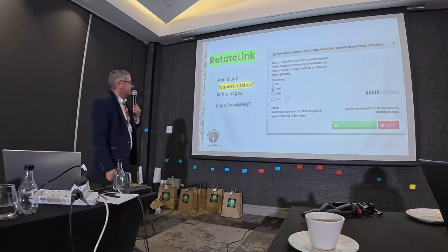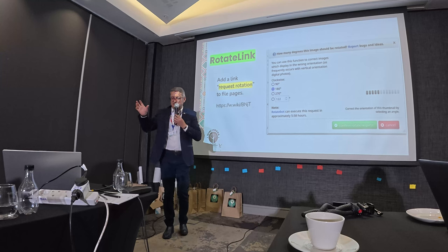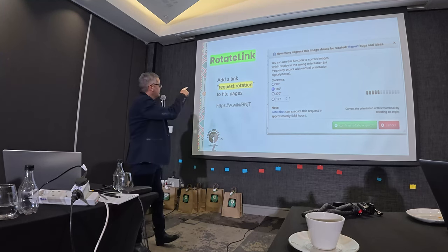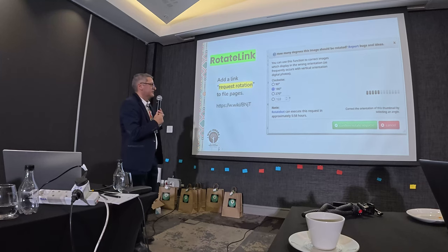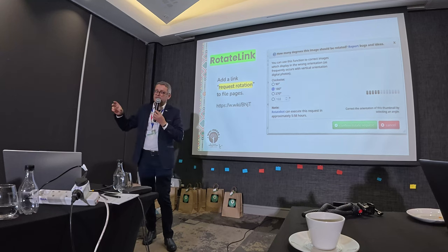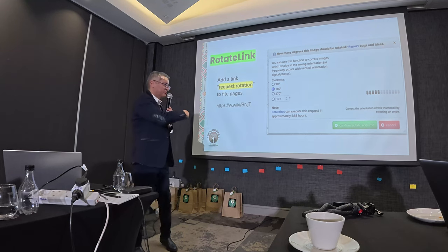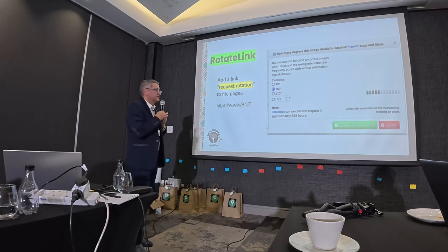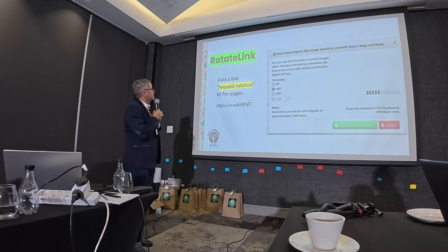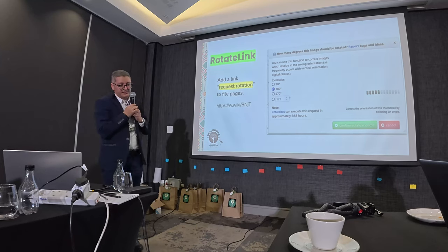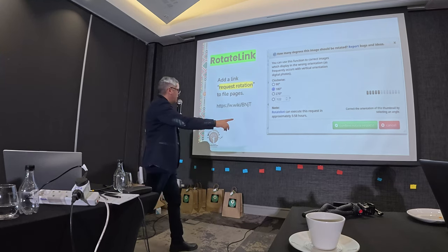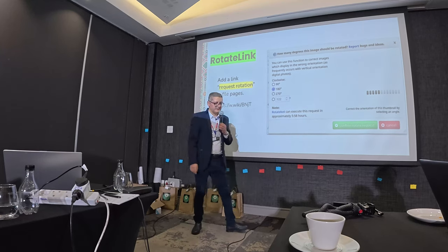There's also a rotation gadget. Sometimes photos are uploaded in the wrong orientation — for example, a portrait photo displayed as landscape. You can make a rotation request for the file using this tool. You don't need to download the file and rotate it manually. The gadget handles it and also shows you how long you need to wait for the rotation to be applied by a bot.